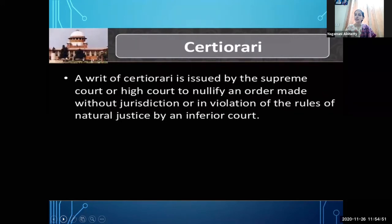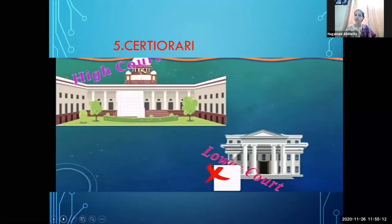Certiorari is issued to prevent or to cure — either to stop the proceedings of the lower court, or to transfer the case to the higher court so it can look into the matter. Two things can happen: the higher court can say to directly transfer the case, or it can tell the lower court to stop or prevent those proceedings. That is called Certiorari.